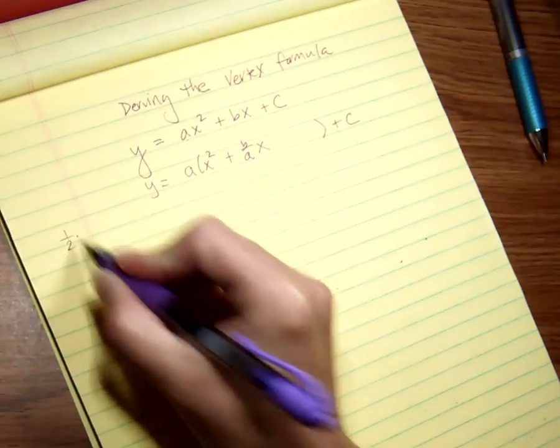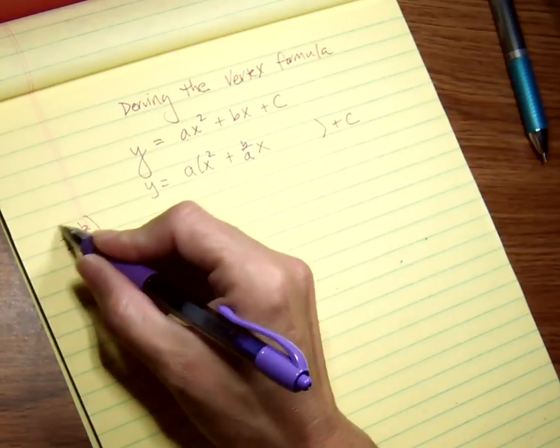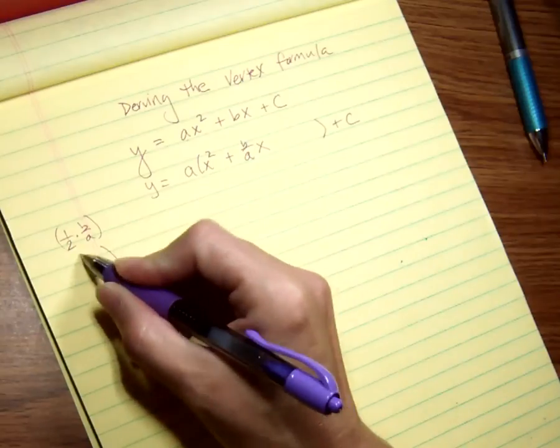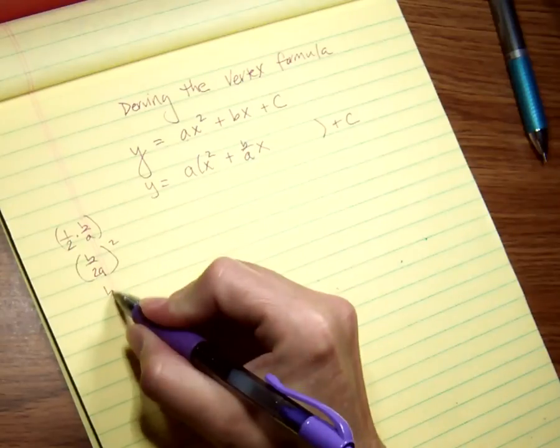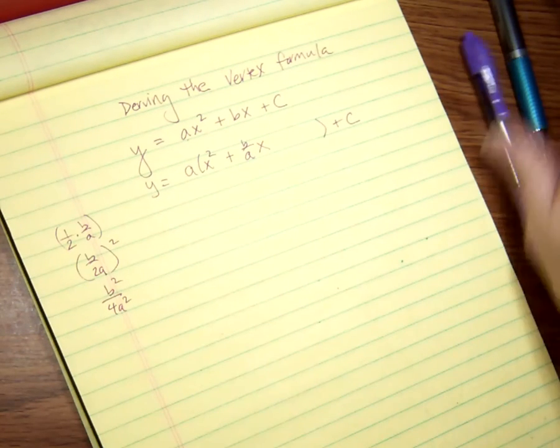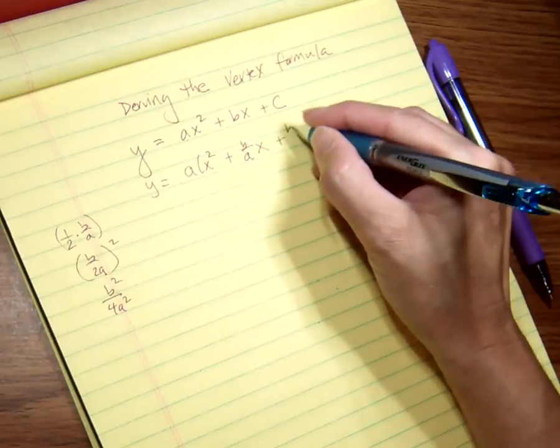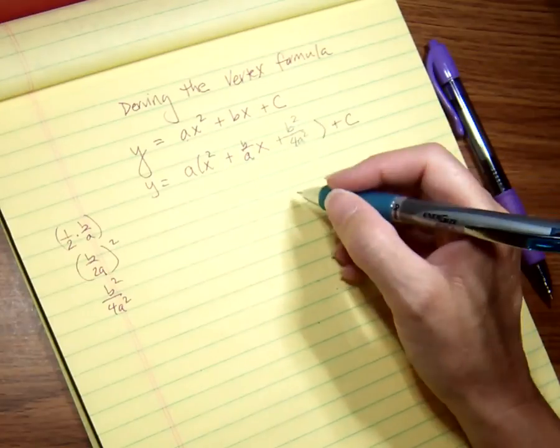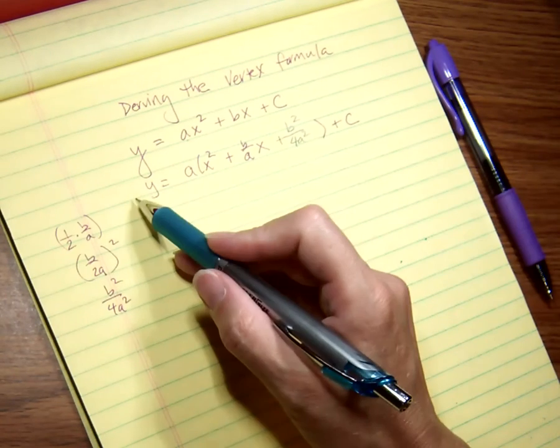Now, off to the side, I do the same thing as before: I have to take half of B/A, which is B/2A, and then I need to square that, so I get B²/4A².